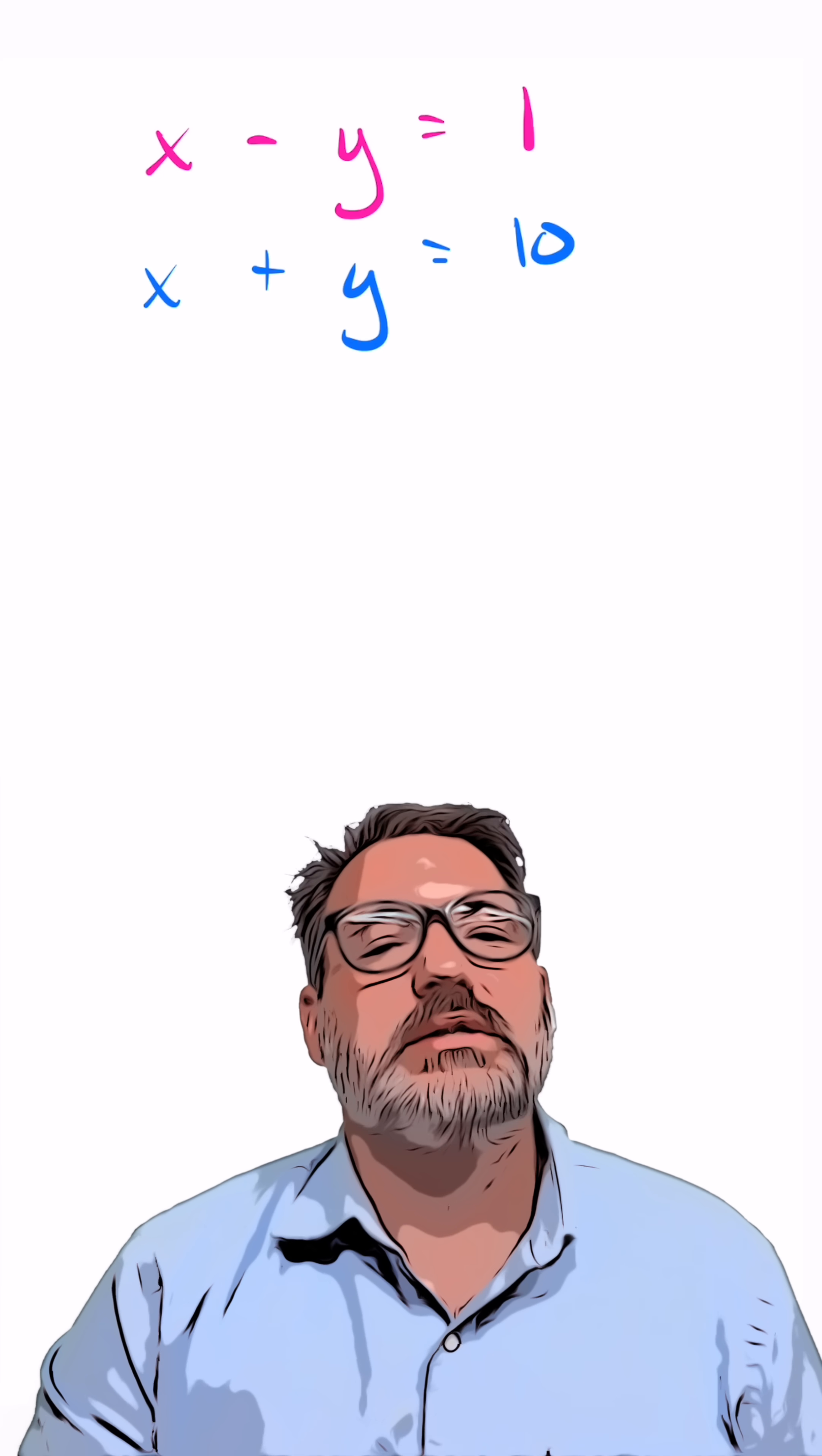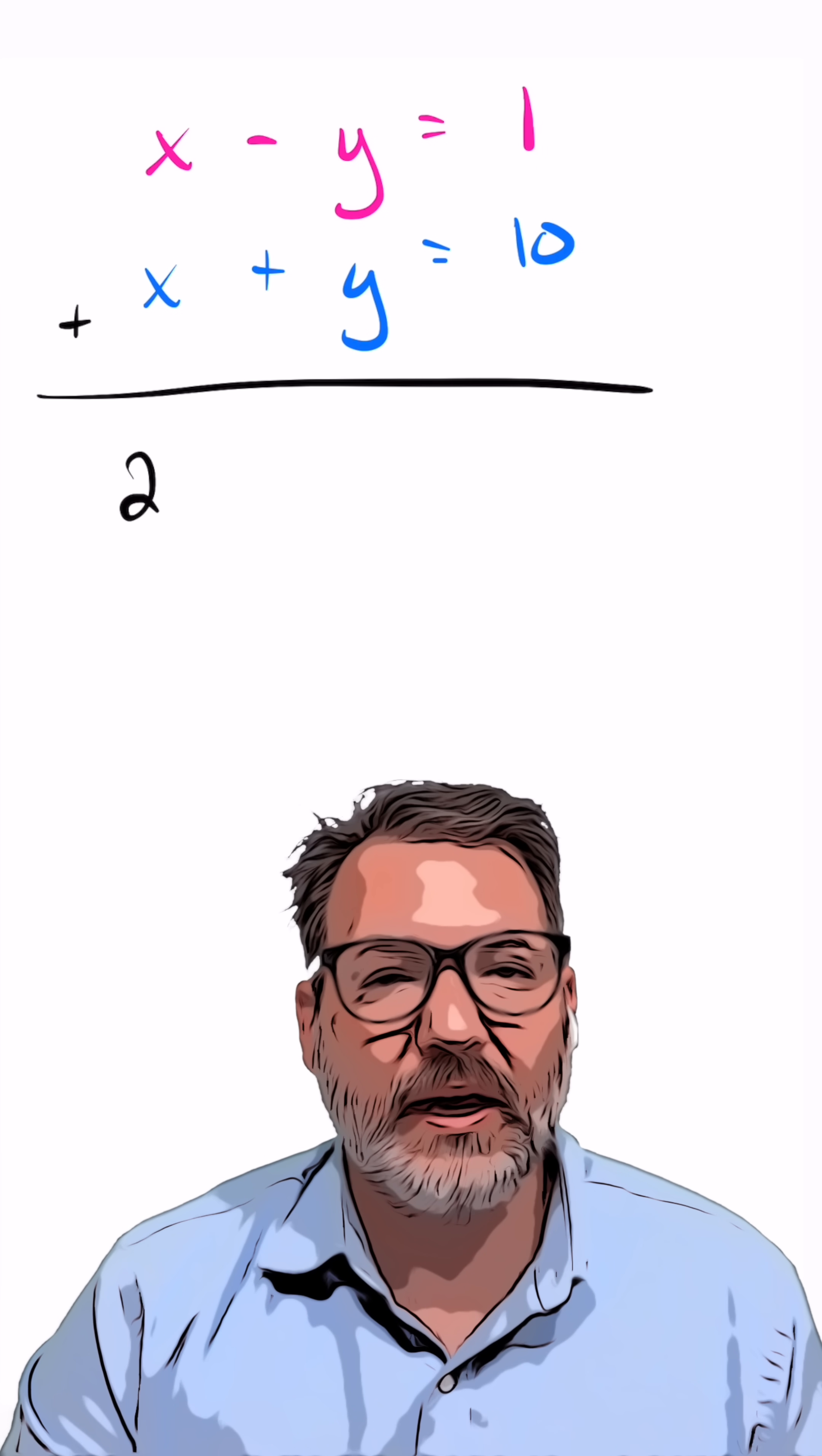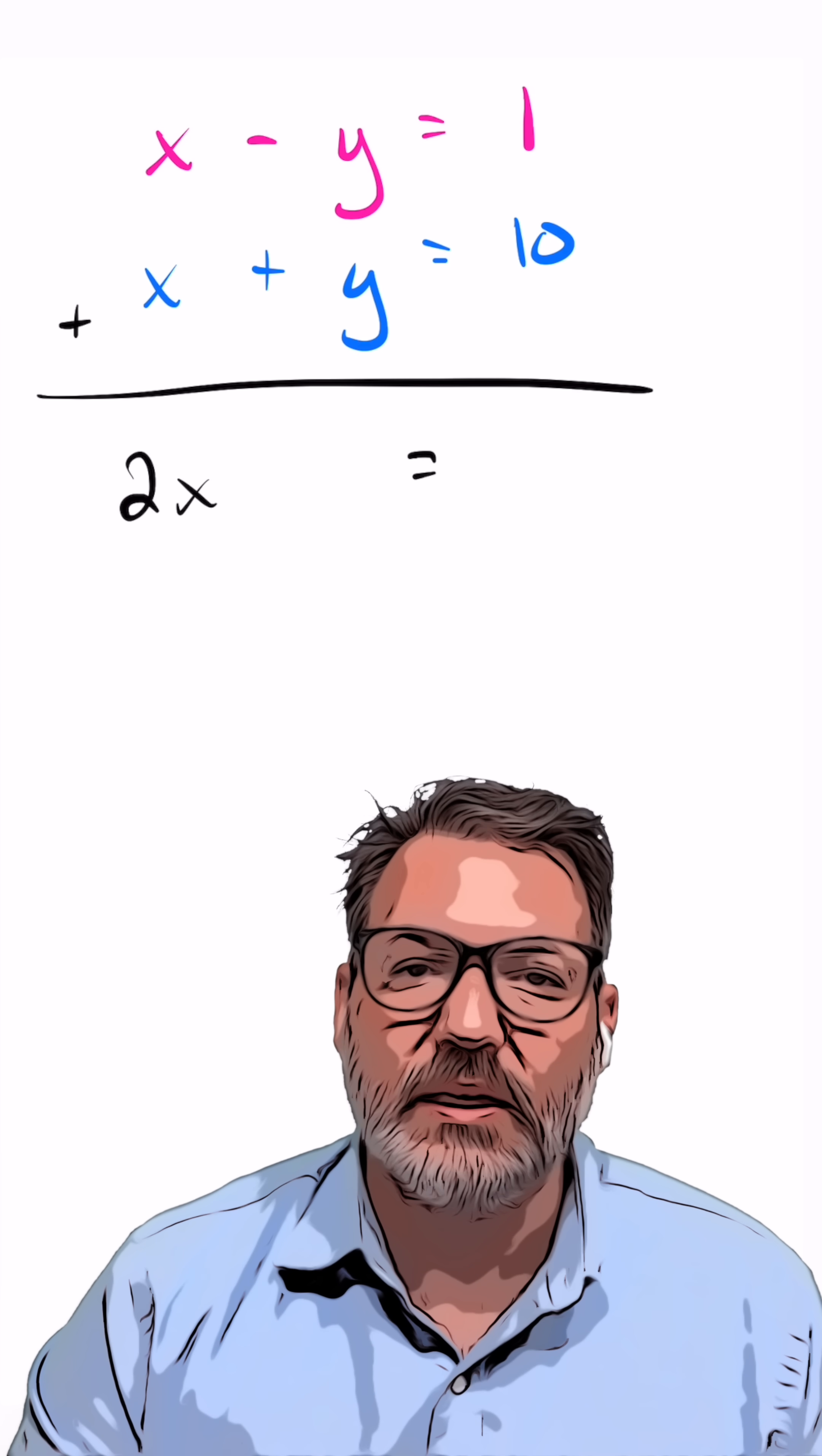And now this is a system of equations primed for elimination. This time, if I add these two together, x plus x makes 2x, and then minus y plus y makes 0. This is what we mean by elimination.